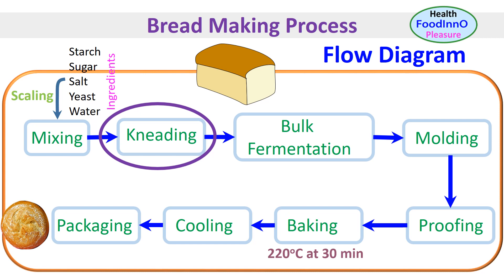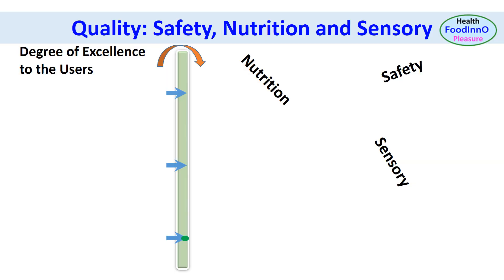Overall, preservation and processing add value to a product. Another important aspect is understanding how processing severity relates to food quality in terms of safety, sensory, and nutrition. Quality is generally defined as the degree of excellence to the users — that is, consumers. These three dimensions of food quality — safety, nutrition, and sensory — are interrelated with the processing severity.